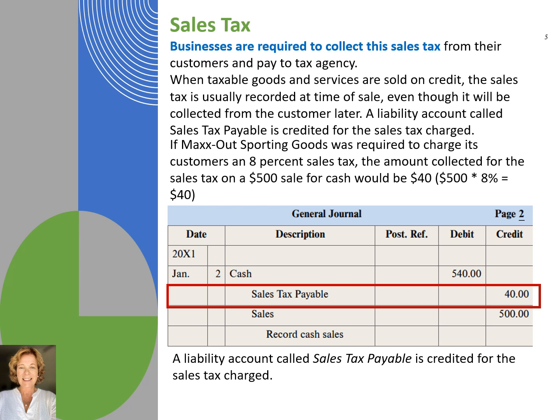Max Out Sporting Goods was required to charge its customers an 8% sales tax. The amount collected for the sales tax on a $500 sale for cash would be $40, calculated by multiplying $500 times 8%. We record this cash sale by debiting cash for $540, because the customer paid Max Out the sales tax which the business in turn must pay to the tax agency. The liability for the sales tax is recorded by writing sales tax payable in the description column and $40 into the credit column. The sale amount is recorded by writing sales in the description column and $500 into the credit column.